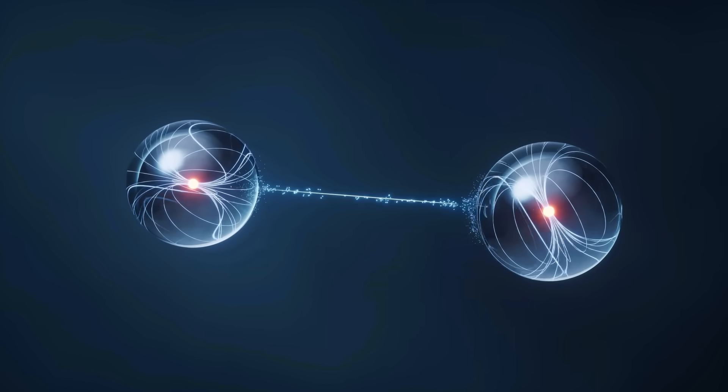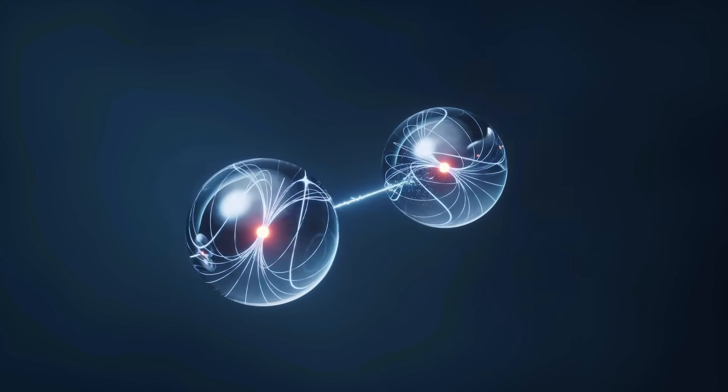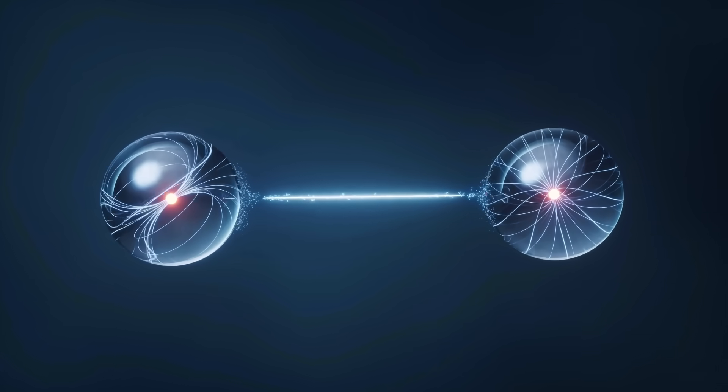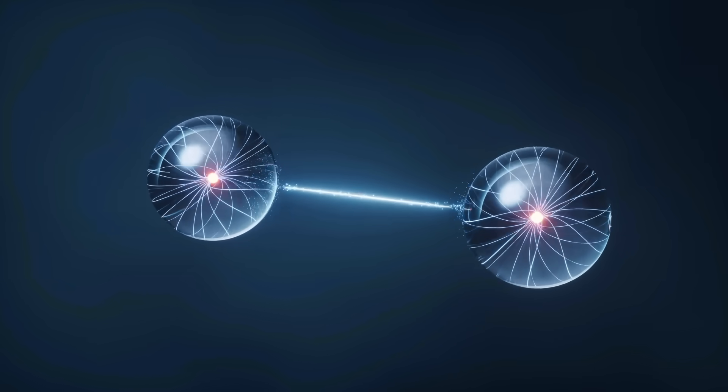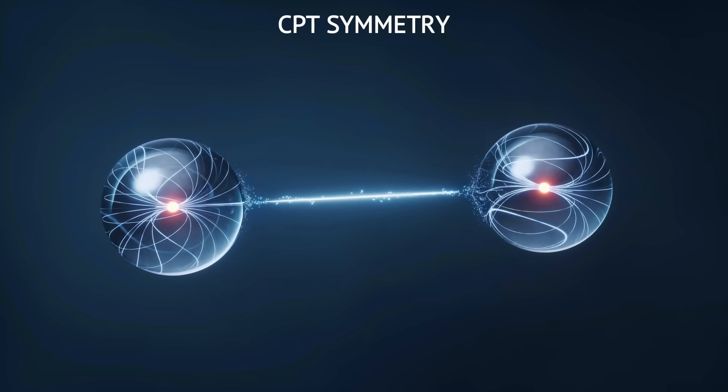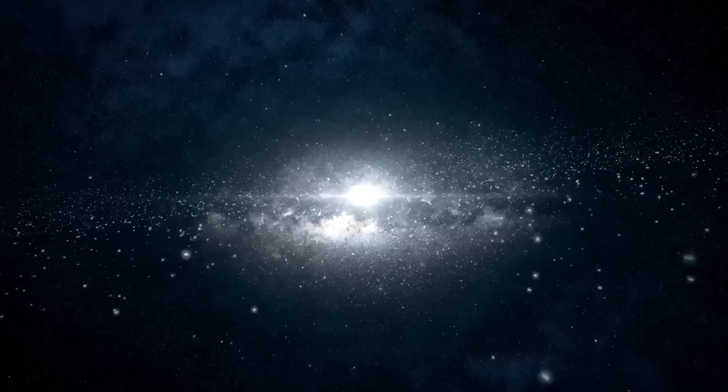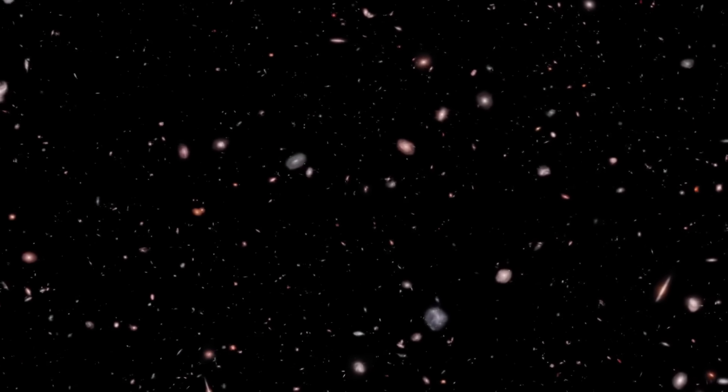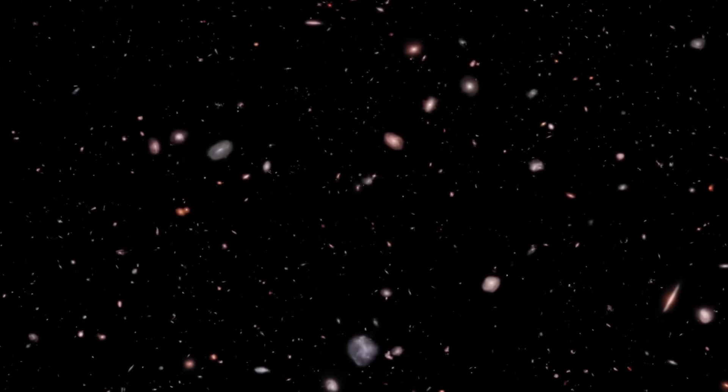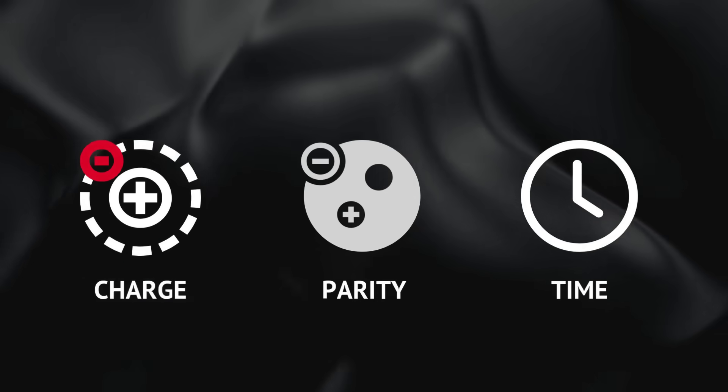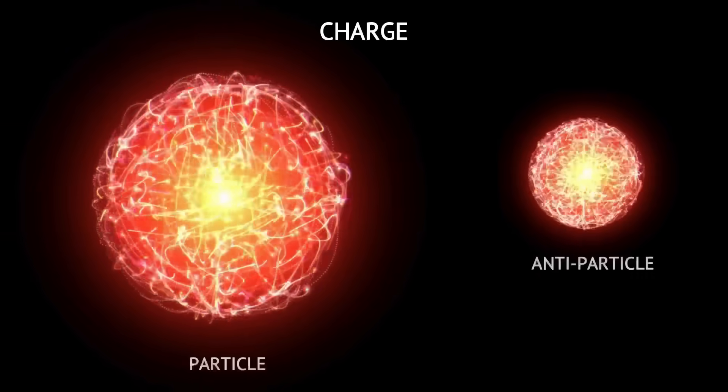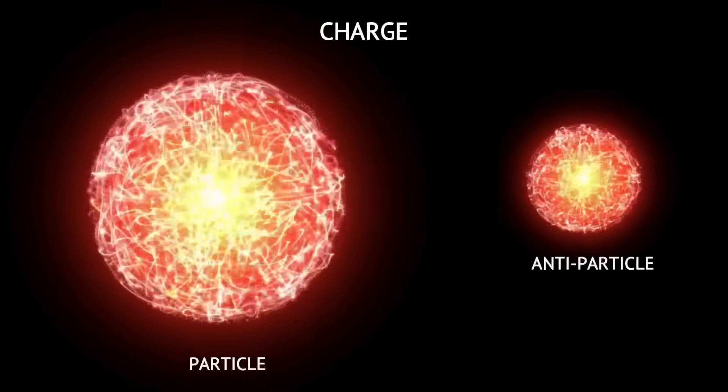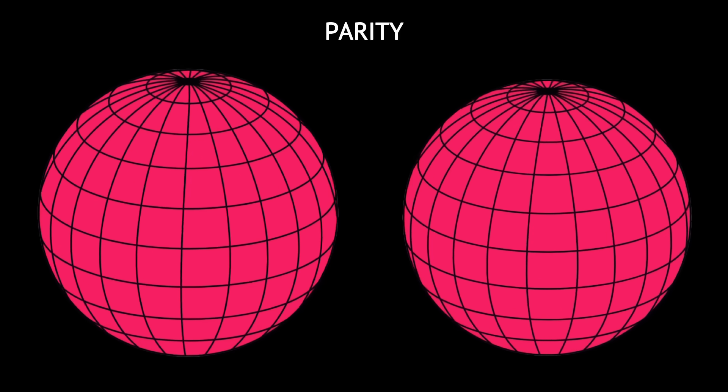Imagine the universe as a grand stage where particles act out a play. In this play, three special rules, charge, parity, and time, govern how things behave. Charge is like swapping matter for antimatter. Parity flips the scene as if you're looking in a mirror and time is running the play backward. Now, if you change all three at once, flip charges, mirror everything, and run time backward, the laws of physics stay perfectly unchanged.